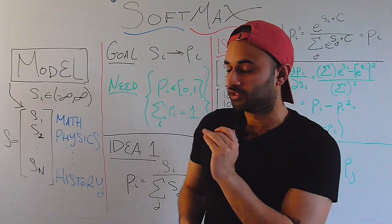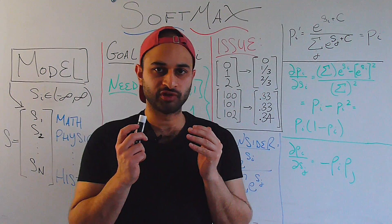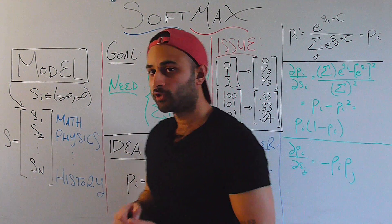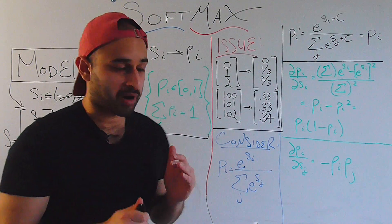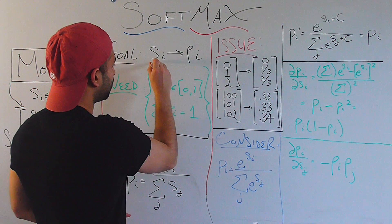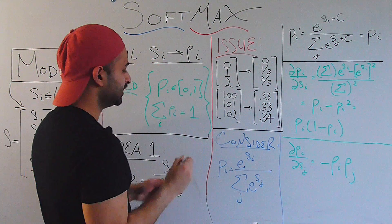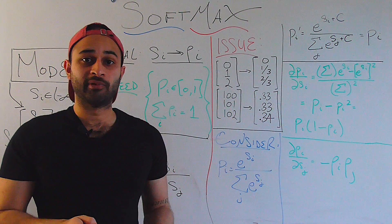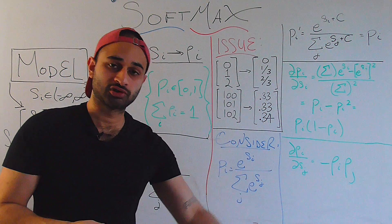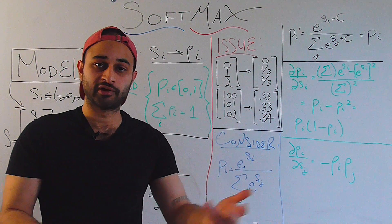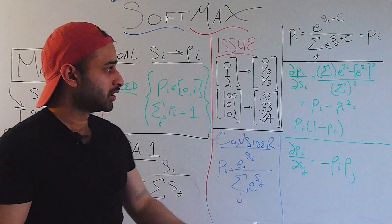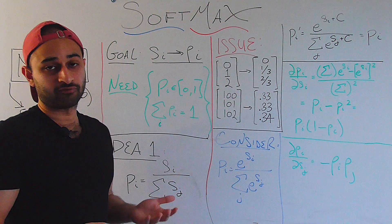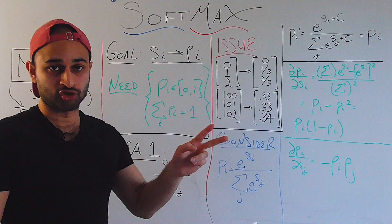Now just like in the sigmoids video, our goal is to transform these scores, which are again all unbounded between negative infinity and infinity, into instead a vector of probabilities. So our goal is to transform the si's into p sub i's. So we'll end up having some kind of probability for, here's the probability the student will choose math, here's the probability they're going to choose physics, here's the probability they're going to choose history, and so on.